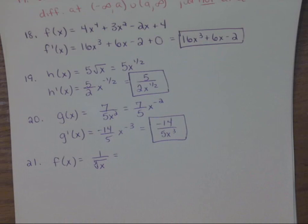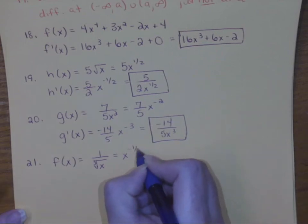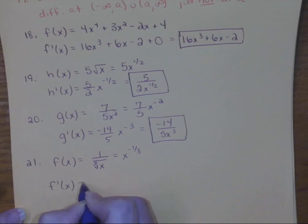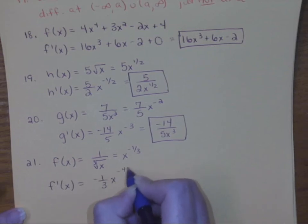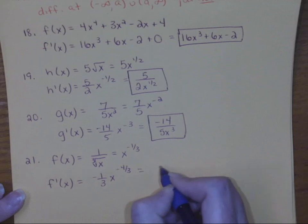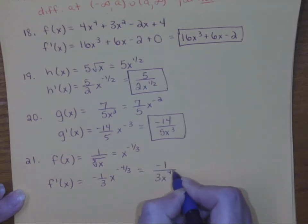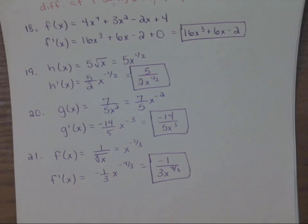For number 21, this might be the trickiest one to rewrite. Notice it's in the denominator, which means it's negative, but I'm also taking the cube root, so this would be x to the negative one third. Then just do the power rule: bring the power out to the front and reduce the power by one. Negative one third minus one is negative four thirds, and then to put it in proper form we make sure it has a positive exponent by writing a fraction.